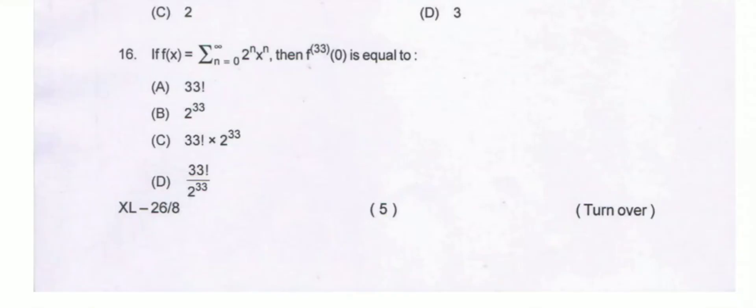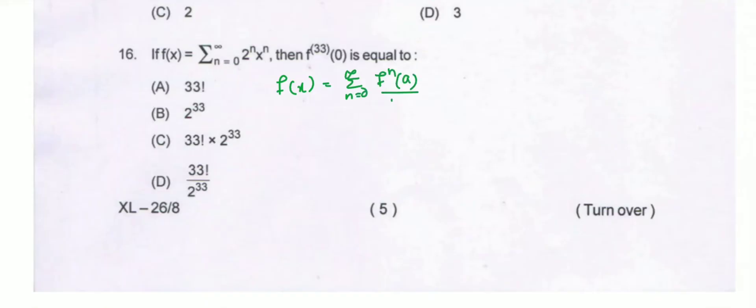Now, question number 16. If f(x) equals the summation from n=0 to infinity of 2ⁿ times xⁿ, then the 33rd derivative of f at 0 is equal to what? The Taylor series of f(x) about the point x=a is the summation from n=0 to infinity of the nth derivative of f at point a, divided by n factorial, times (x-a)ⁿ.